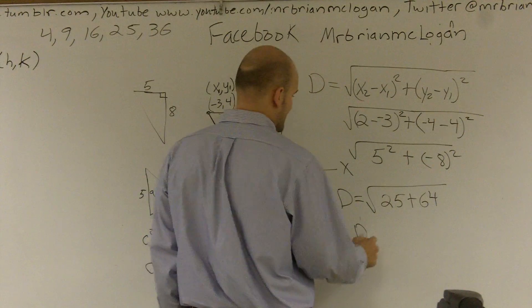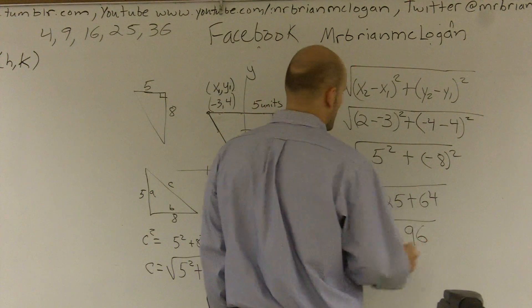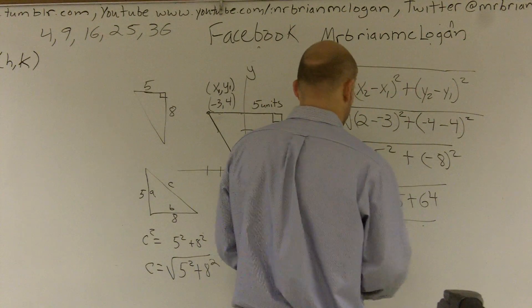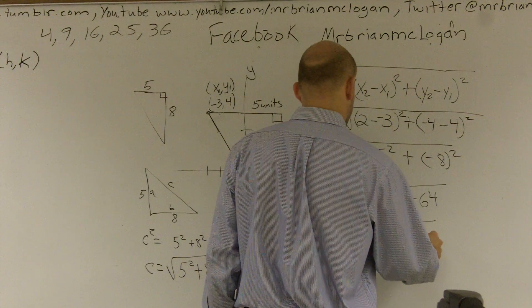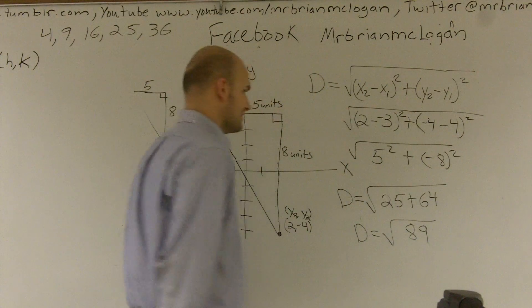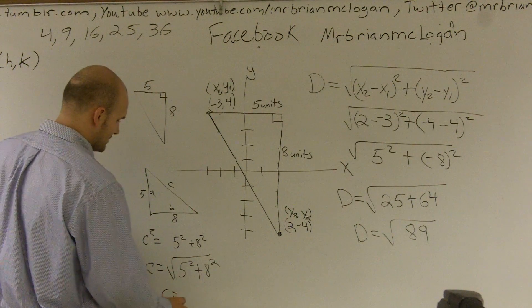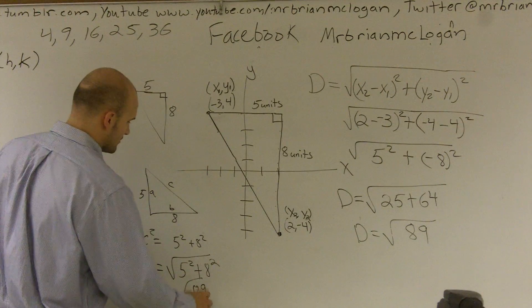And so d equals the square root of 86. I'm sorry, 89. Square root of 89, same thing here. c is going to equal the square root of 89.